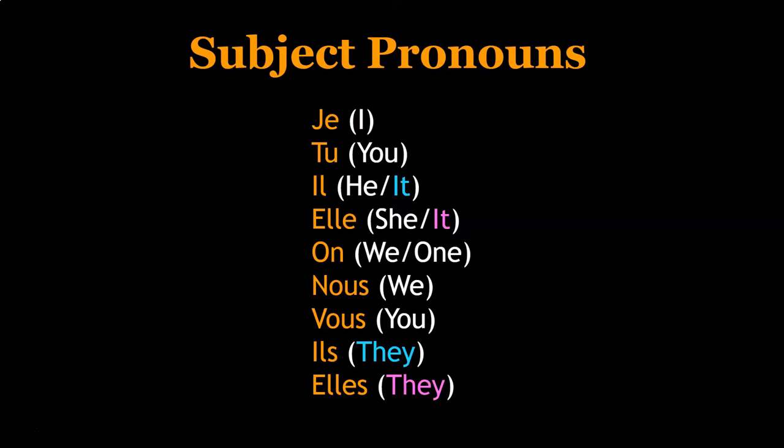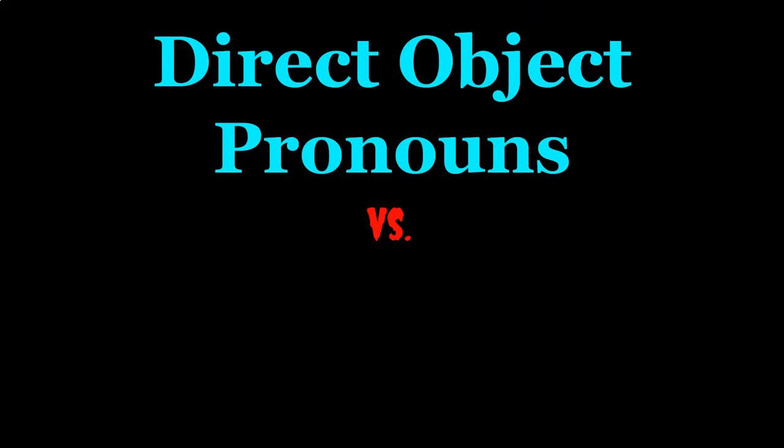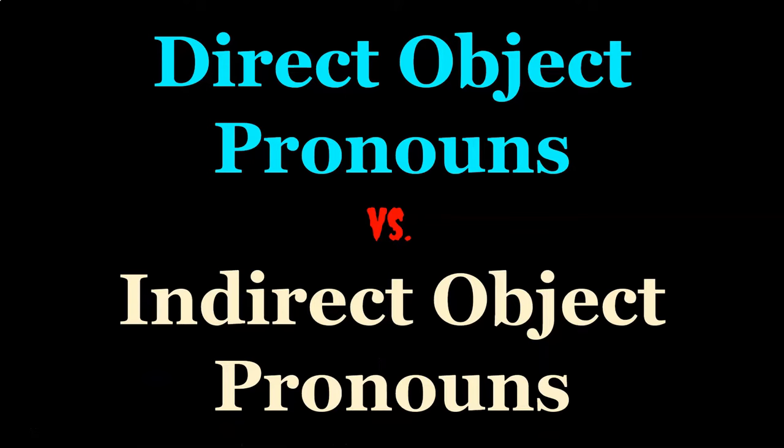Nous is the formal version of we. Vous is the plural form of you, or the formal version of you when talking to one person. Ils — with an S — is 'they' for a masculine group, and elles — with an S — is 'they' for a feminine group. For example, in our previous sentence we would use the il pronoun to replace the subject: 'David mange une pomme, il a faim.'